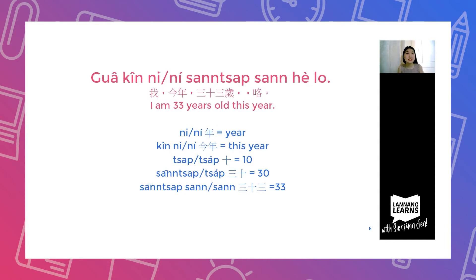Just replace the number with your age. So if you are 20, you say the phrase for 20 years old. You can also say an alternate form — just remove the word meaning "this year" if you prefer.